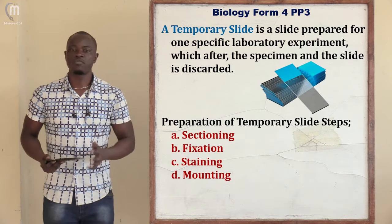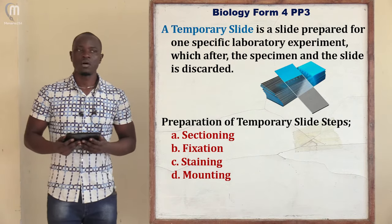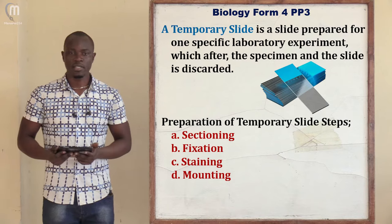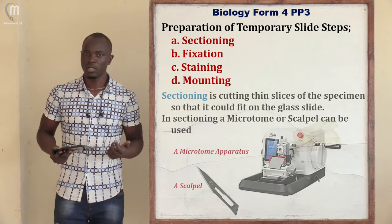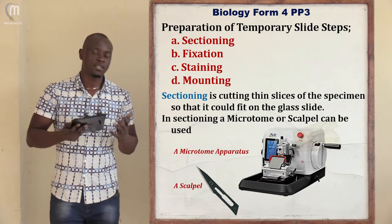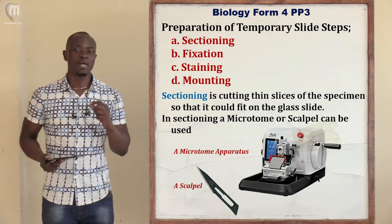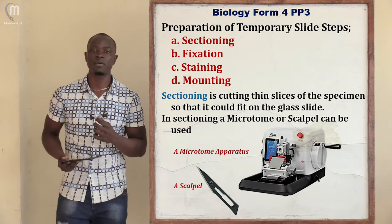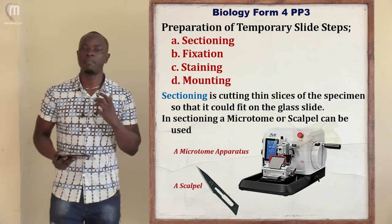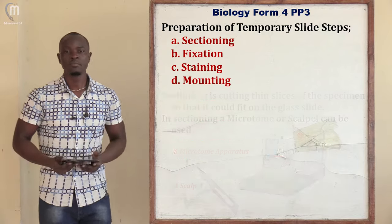In Form 1, we learned four different methods for preparing a temporary slide. The first procedure is sectioning — cutting very tiny pieces of the specimen which is to be observed in the microscope. You can use a scalpel, but the best apparatus for sectioning is a microtome. That is the apparatus called a microtome, which is the best for undertaking this process of sectioning when preparing a temporary slide.